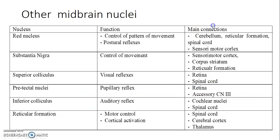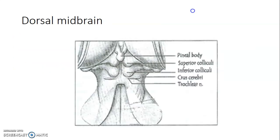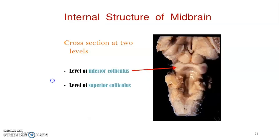Pause at this slide to appreciate the connections of the different nuclei. The midbrain crus cerebri has corticospinal and corticonuclear fibers in the middle and corticopontine fibers laterally. The medial lemniscus carries proprioception, vibration, and discriminatory touch from nucleus gracilis and cuneatus. The spinal lemniscus carries spinothalamic and spinotectal fibers. The lateral lemniscus carries auditory information from the cochlear nucleus. You can appreciate the tectum with the superior and inferior colliculi — together called the corpora quadrigemina — and the pineal body above the superior colliculi.